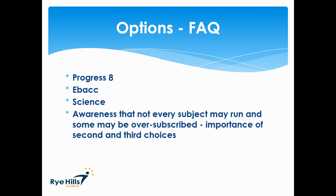Finally, in a climate of very tight budgets, it's really important to be aware that subjects may not run if too few students opt, and some subjects are often oversubscribed. This is why it's really important that students think carefully about their second and third choices. Option forms are date-stamped as they are completed, so that if a subject is oversubscribed, the order in which forms are completed can be used to allocate students to subjects.